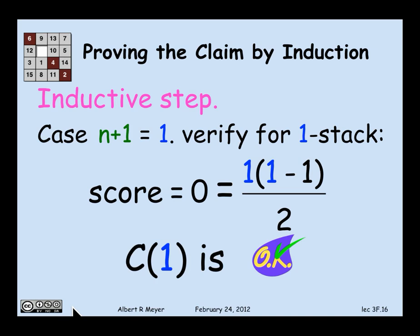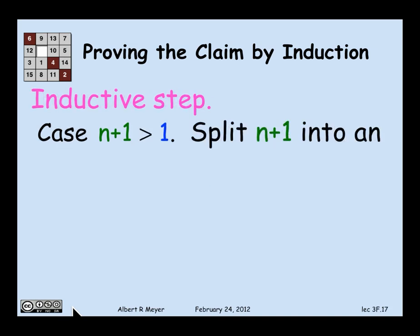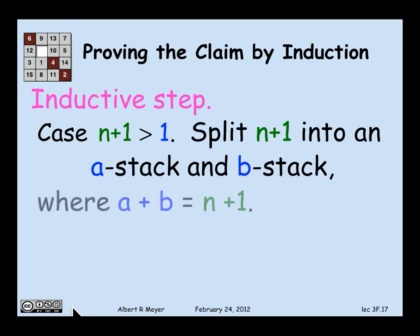Well, the other case in the inductive step is that n+1 is greater than 1. This is the interesting one because now it's possible to make a move. So since n+1 is greater than 1, it's two or more blocks. I can make a move into two stacks that are both of positive size. So suppose I do that. Suppose I split the stack of size n+1 into an a-stack and a b-stack, where a and b sum to n+1.